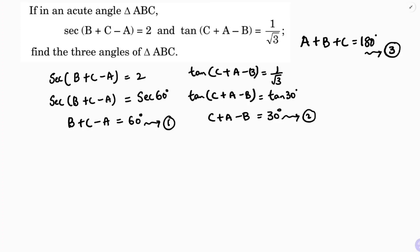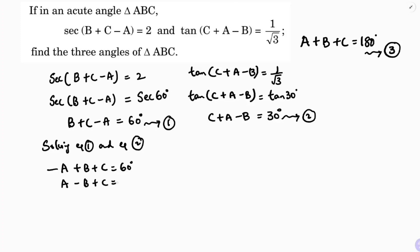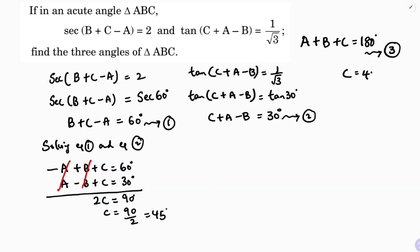Now solve any two equations. Solving equation 1 and equation 2: equation 1 written in order is minus A plus B plus C equals 60 degrees, and equation 2 is A minus B plus C equals 30 degrees. Adding these two, A and minus A cancel, B and minus B cancel, giving 2C equals 90. So C equals 45 degrees.